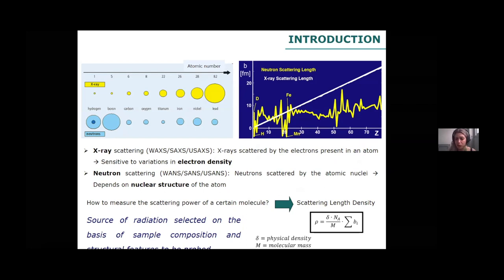That's a very powerful tool — we will also see contrast variation later on. In the case of carbohydrates, since we have many labile hydroxyl groups, this is an advantage. We need to know that the source of radiation we select for our experiments is very important, and we have to select it based on sample composition and the structural features we want to investigate. In this context, the scattering length density is a very important parameter — something you need to take into account before you plan your experiments.